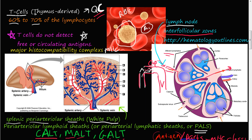T cells are derived and mature in the thymus. They're first made in the bone marrow and then shipped to the thymus where they undergo maturation. That's why they're called T cells. T cells function kind of like a quality control department — like a QC department in a business that checks on product quality. 60 to 70% of all lymphocytes are T cells.